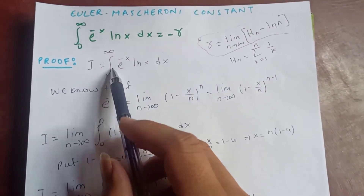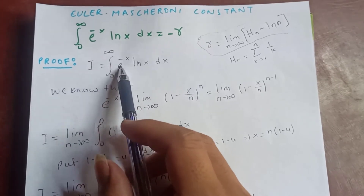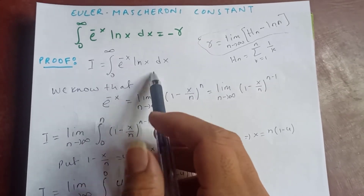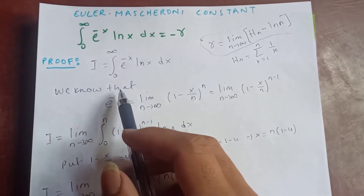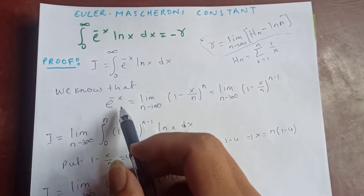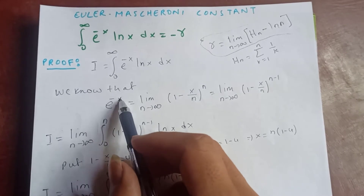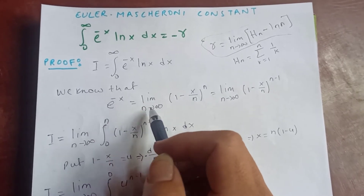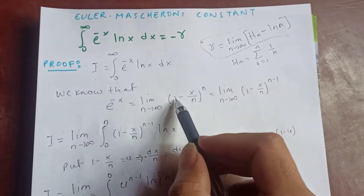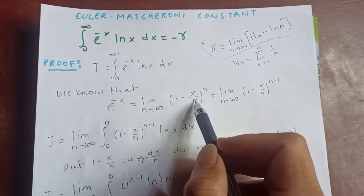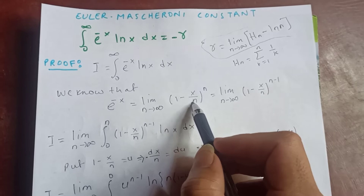Let our integral be I, so I = ∫₀^∞ e^(-x) log(x) dx. We know that e^(-x) can be written as the limit as n → ∞ of (1 - x/n)^n.